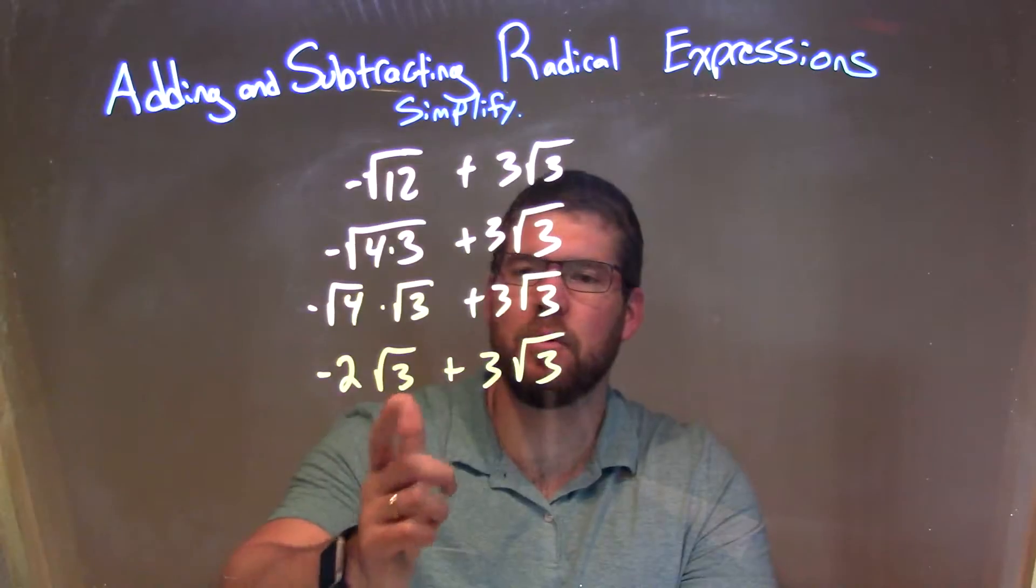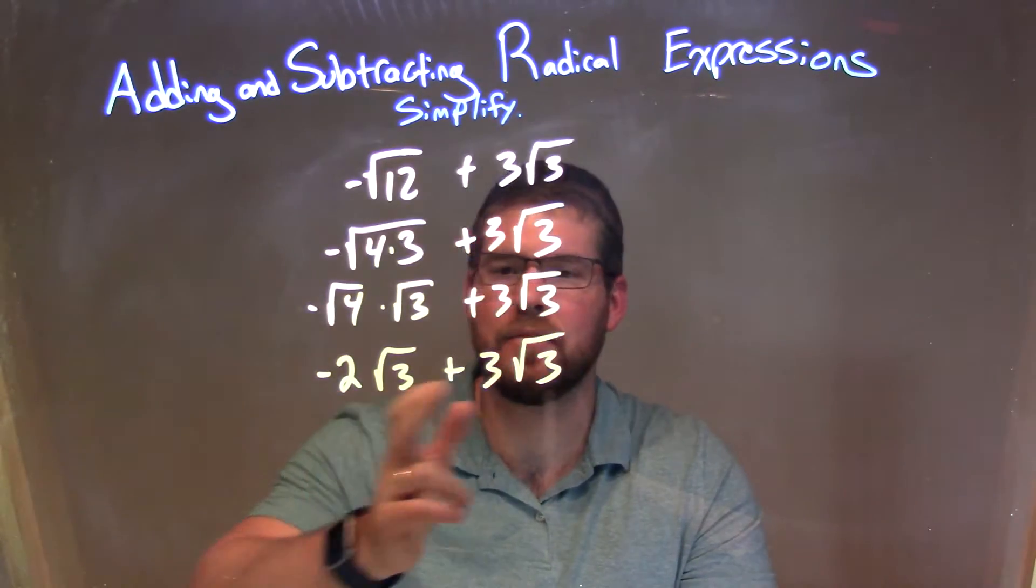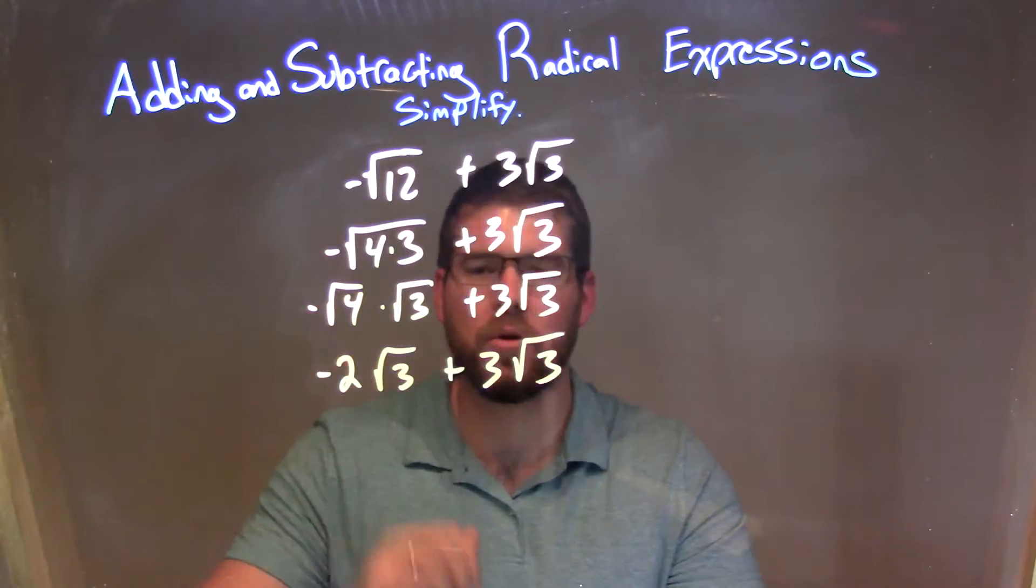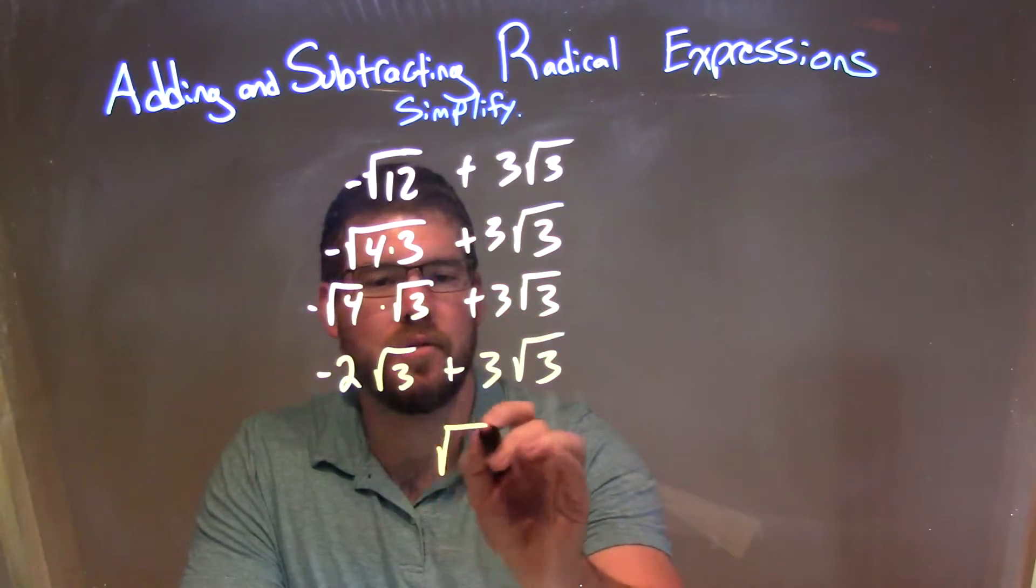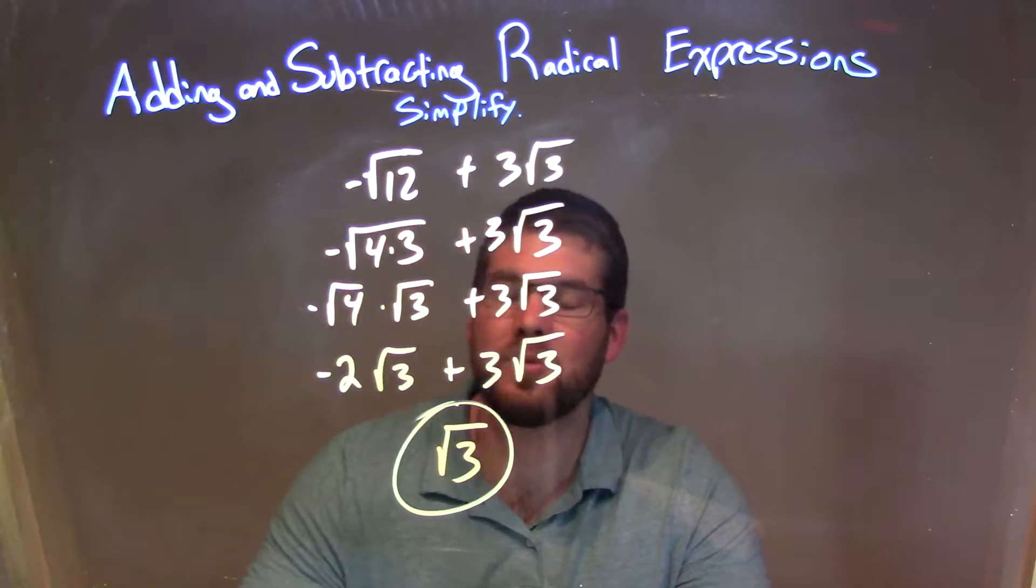Well, now we have both the same square roots. That was our goal. So we look and we add what's in front. Negative 2 plus 3 is just a 1. Don't really need to write the 1. 1 times the square root of 3, and there we go. Our final answer here is just a simple square root of 3.